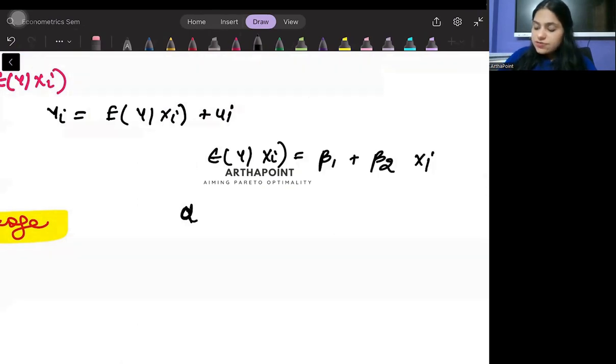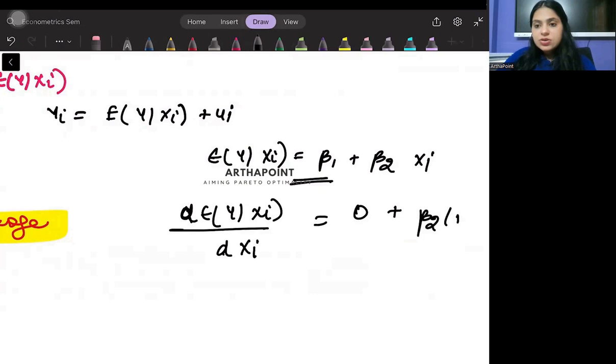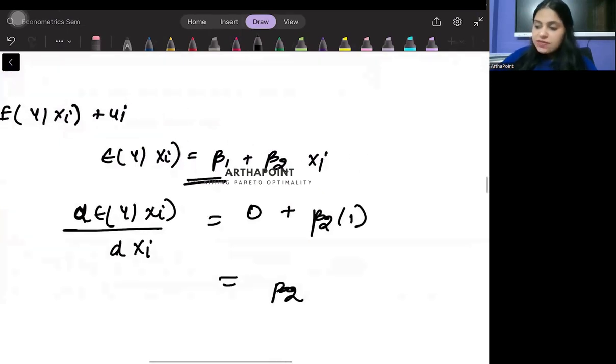So now if I just differentiate E of y given xi with respect to xi, differentiation of constant will be 0 plus beta 2 into 1. So this will be beta 2. So actually speaking, when I talk about beta 2, it actually goes ahead and tells me how the average value of y changes as x changes.